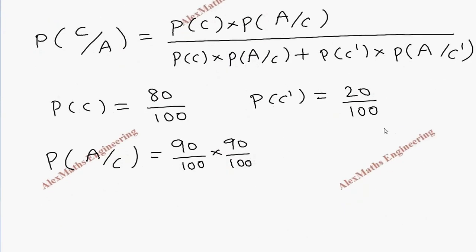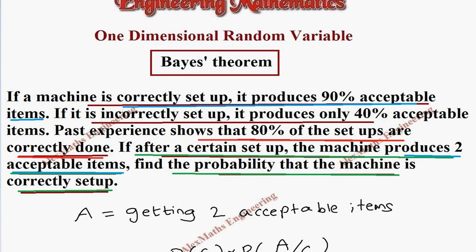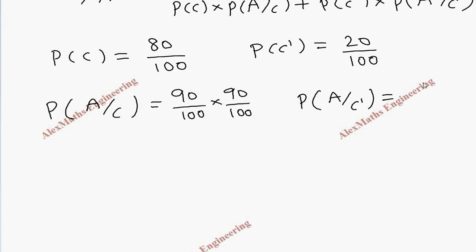The other value we need is P of A given C dash — when it is incorrectly set up. As given in the question, it produces only 40% acceptable items, so for one acceptable item it is 40 by 100. For two items, it is 40 by 100 into 40 by 100.